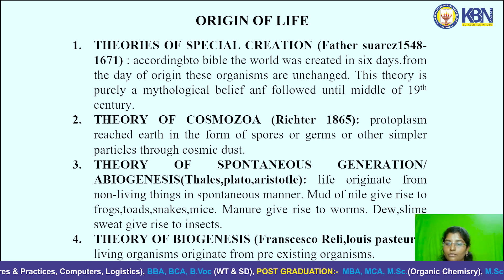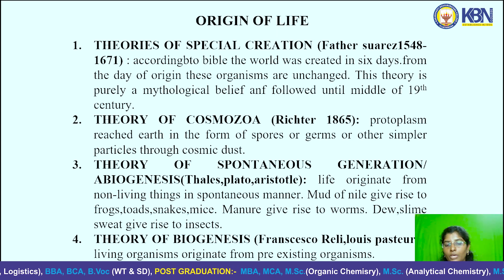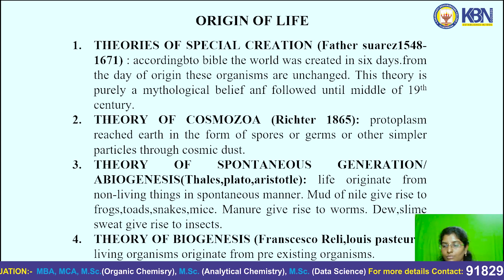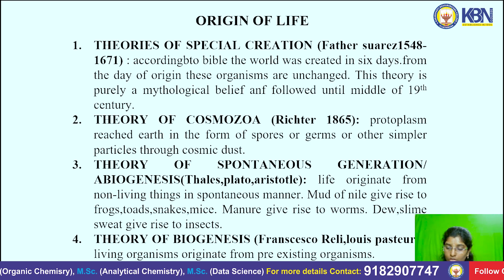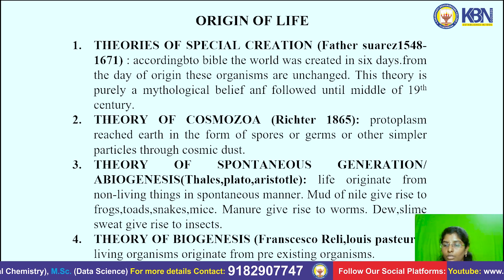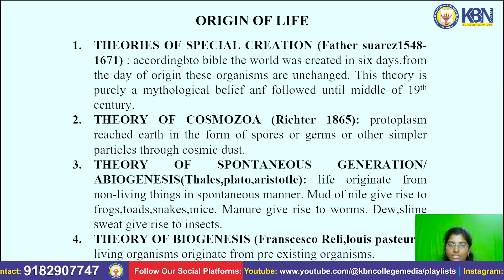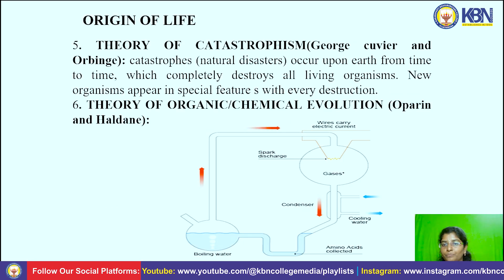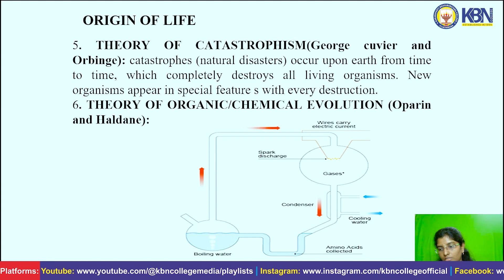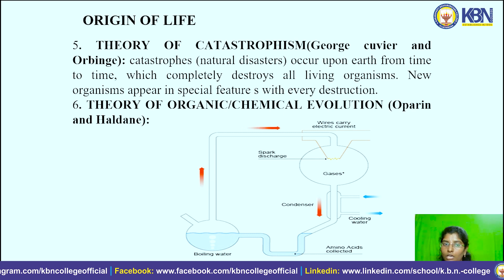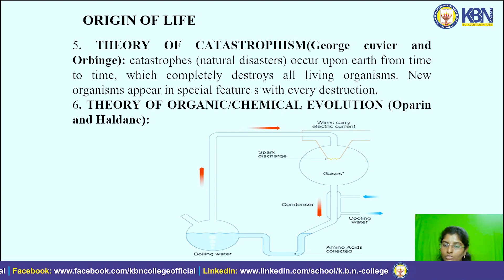The next theory is Biogenesis, which states that living organisms originate from pre-existing organisms. Following that is the Theory of Catastrophism, which explains that natural disasters occurring on Earth from time to time completely destroy all organisms, and then new organisms appear on the Earth.